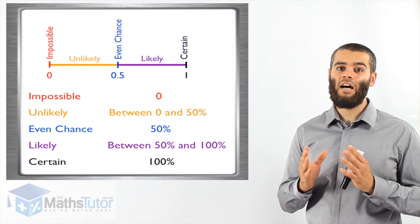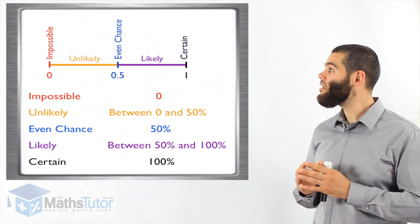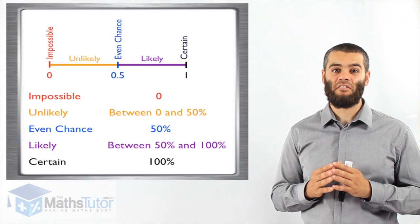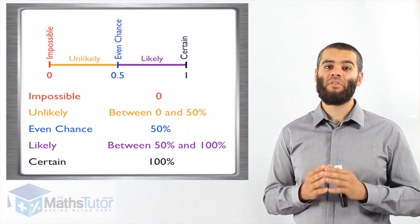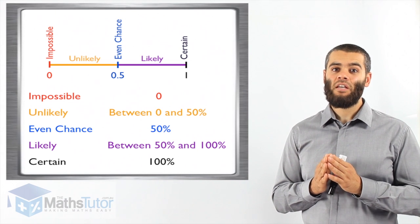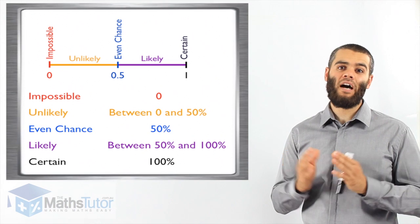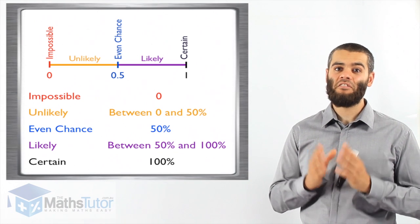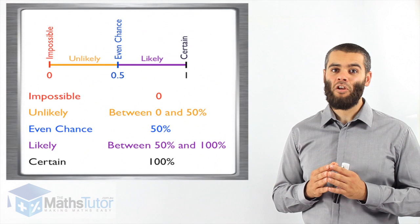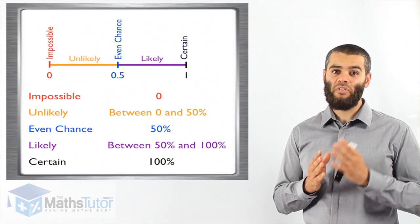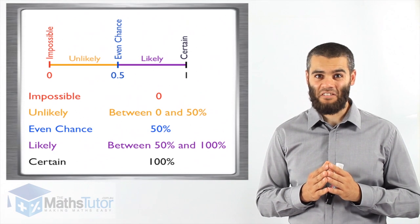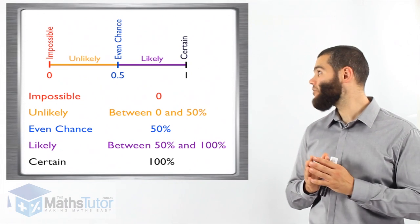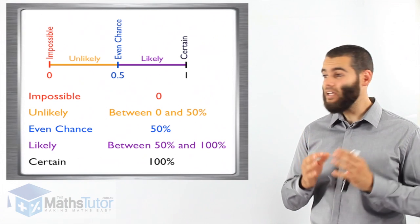So in between we have as well some measurements. Right in the middle we have an even chance. Even chance meaning fifty percent. Fifty percent meaning it can be one or the other. It has an even chance of happening. So tossing a coin for example. There is a fifty percent chance it's going to be a heads. And a fifty percent chance it's going to be a tails. So we say it is fifty fifty or even chance.